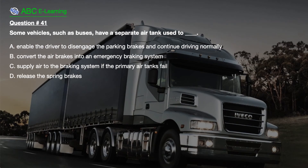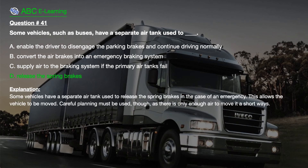Question number 41. Some vehicles, such as buses, have a separate air tank used to: A. Enable the driver to disengage the parking brakes and continue driving normally. B. Convert the air brakes into an emergency braking system. C. Supply air to the braking system if the primary air tanks fail. D. Release the spring brakes. The correct answer is D. Release the spring brakes. Explanation: Some vehicles have a separate air tank used to release the spring brakes in the case of an emergency. This allows the vehicle to be moved.